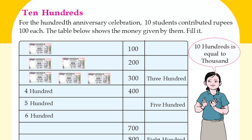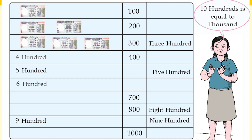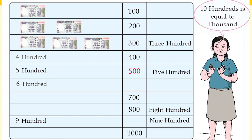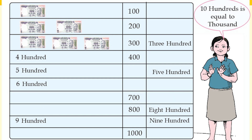Ten hundreds. For the 100th anniversary celebration, 10 students contributed 100 rupees each. The table below shows the money given by them. Fill it in: 100, 200, 300, 400, 500, 600, 700, 800, 900, then back to 100.